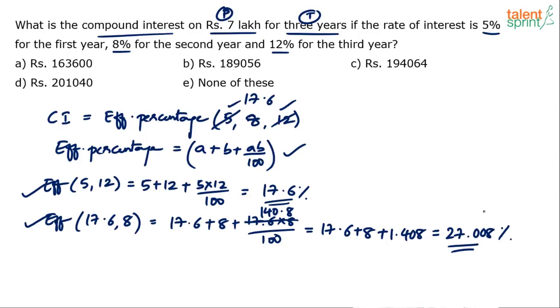27.008 percentage of what? The principal amount. So your final answer, the compound interest is going to be, let's say we are doing an approximate calculation. I mean options if you observe, we can easily do an approximate calculation. 1,63,000, 1,89,000, 1,94,000, 2,10,000. There is a huge difference. Of course, the option none of these is there and when none of these is available in the options, you can't take chances but I mean do the calculation, full calculation. If you don't want to take a risk, you have to do the full calculation. So let me do an approximate calculation.